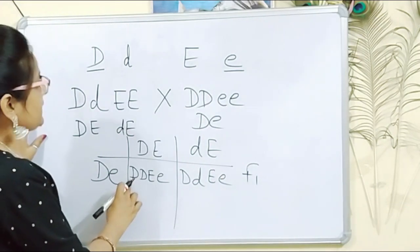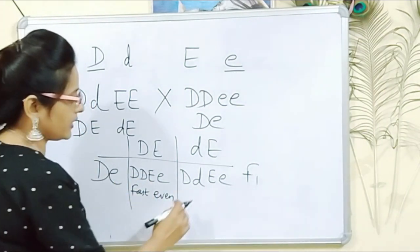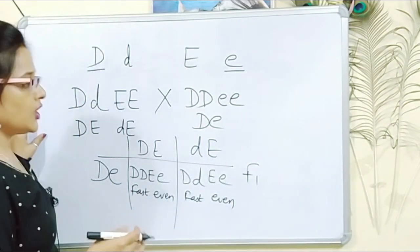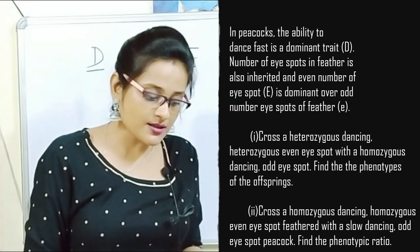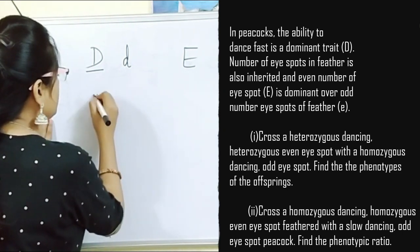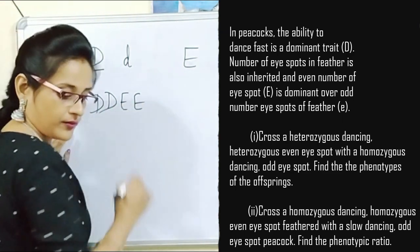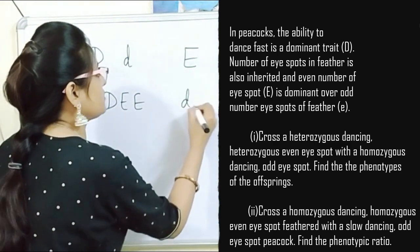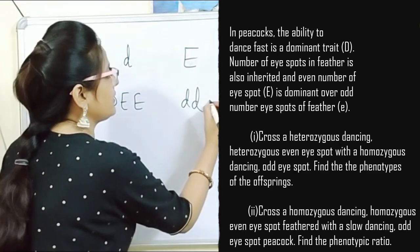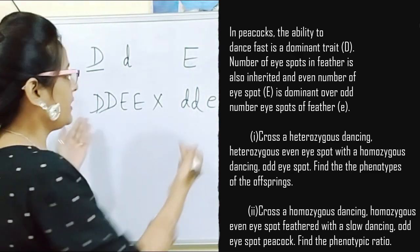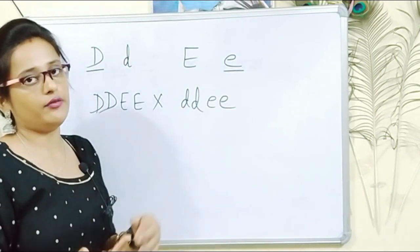All F1 offspring are fast dancing with an even number of eye spots in feathers. This is a classical dihybrid cross — just like Mendel's yellow round versus green wrinkled, we follow the same approach for F1 and F2 results. No matter how complicated or twisted a question appears, all the hints are within it. Read it carefully and patiently, and try to derive the answer.